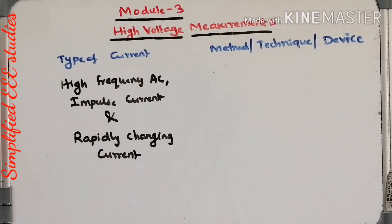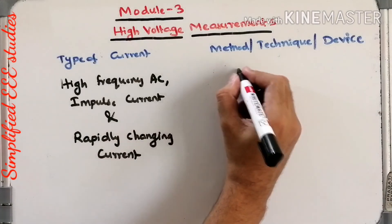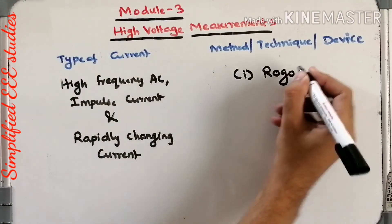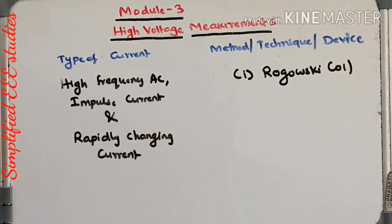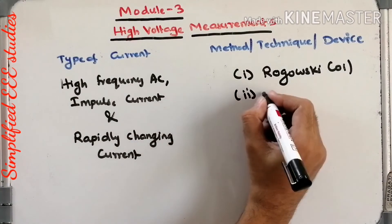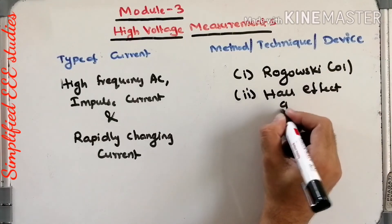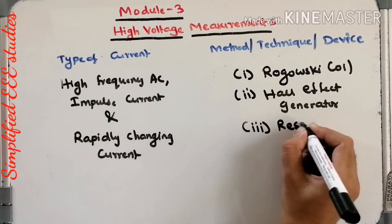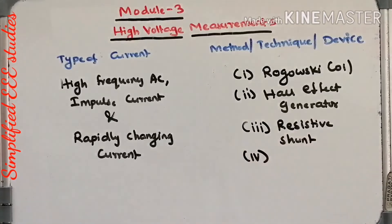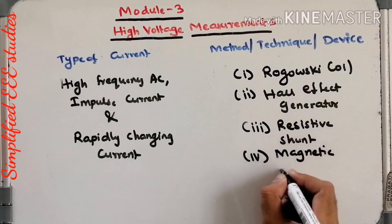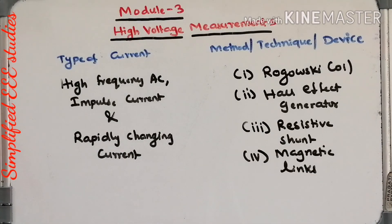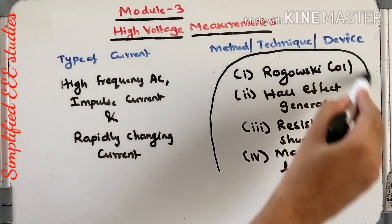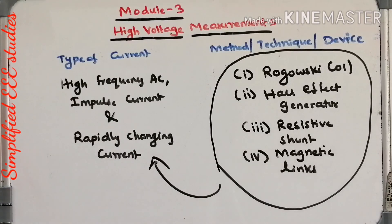For measurement of high frequency AC, impulse current, and rapidly changing current, the available devices are: the Rogowski coil, which works on the principle of mutual induction; the Hall effect generator; a resistive shunt; and magnetic links, which work on the principle of remanent magnetism.